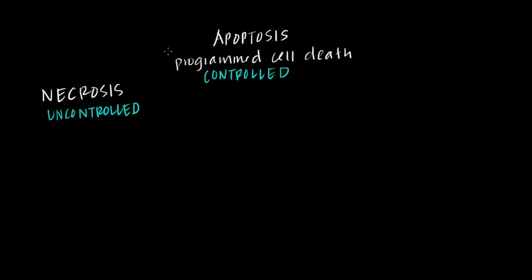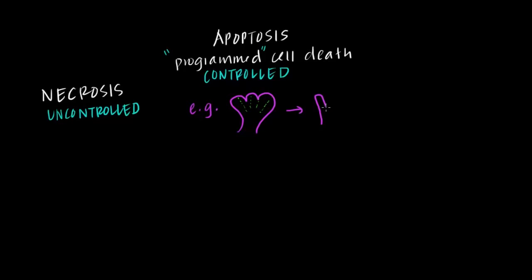Apoptosis, on the other hand, as its definition implies, is a programmed type of cell death that usually has some big purpose and can often confer some advantage to the organism. One example is embryological development, specifically the development of our fingers and toes. Early on in development, when we're still a fetus, our hand looks something like a paw. Through apoptosis, the tissue between our digits eventually dies off, and that purposeful, controlled death of this tissue ultimately allows us to produce a hand with five separated digits that we call fingers.